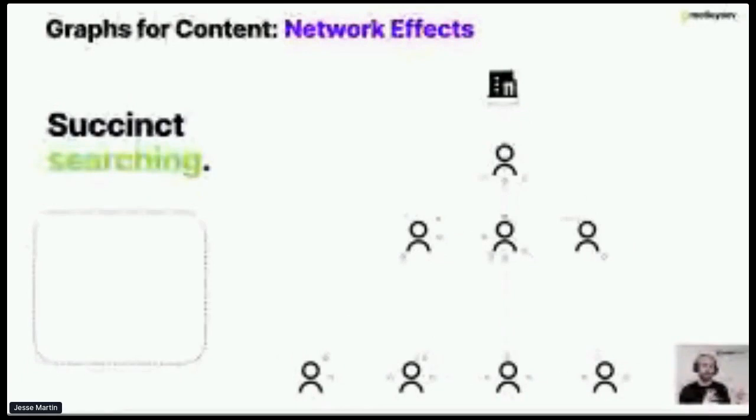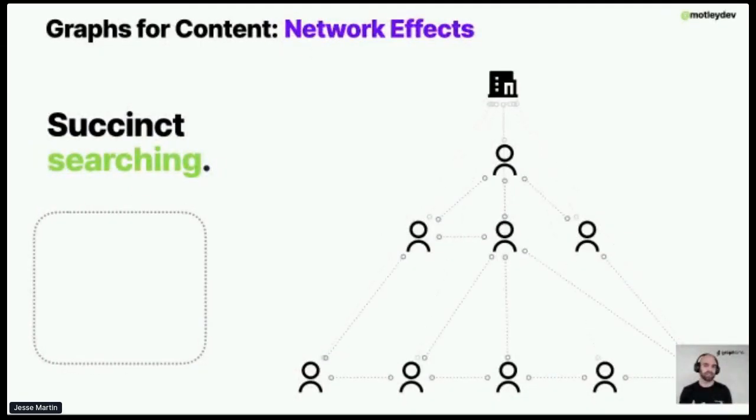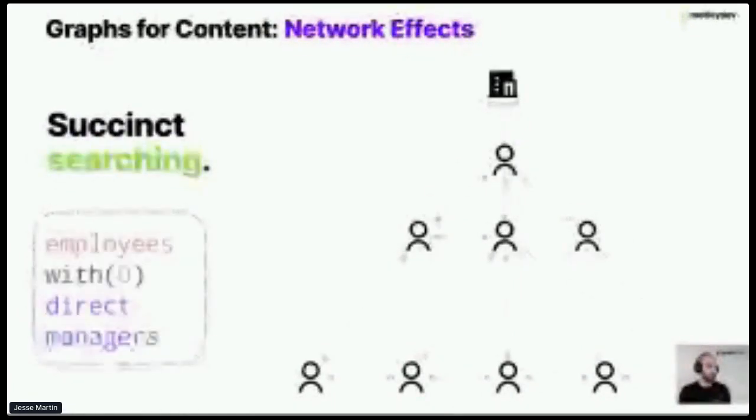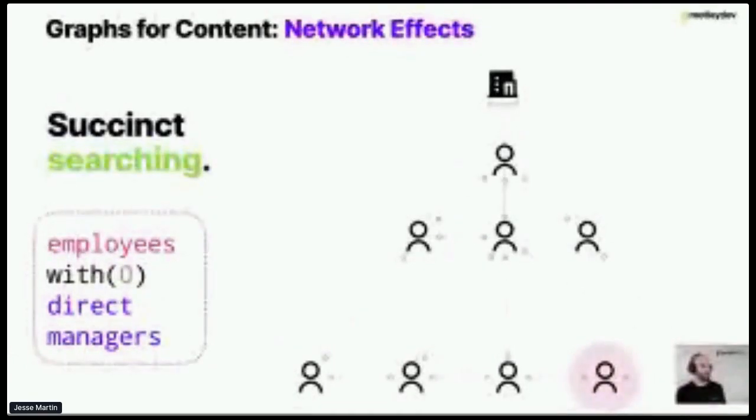The third point about graph structures applied to content is network effects. The more nodes that you add, it creates an ability to have very succinct searching because the dynamicism of your data allows you to be really literate with how you're trying to query for something. If you have a structure where you've observed how many nodes you have connected and you have these built-in patterns, we can start with a question like 'show me employees with zero direct managers.' That's an important business question to surface. If we're using a graph structure, it allows us to map these intentions or requests to that graph type structure. That's the third benefit of graphs for content, where we can see new value added, the ability to search better, and potentially get new business opportunities.